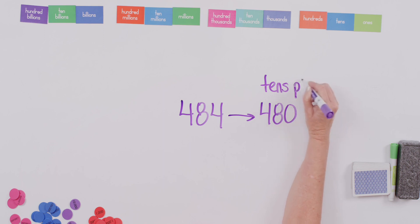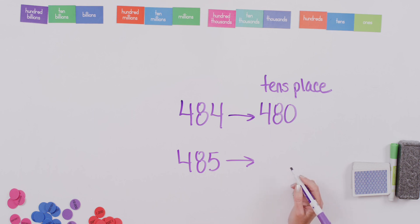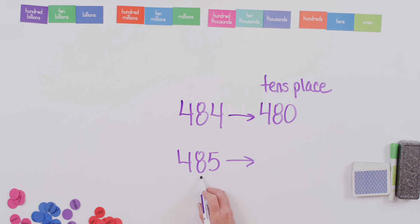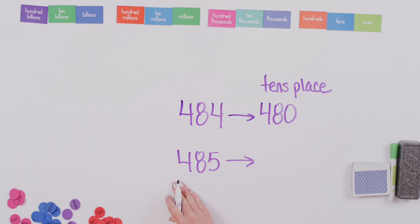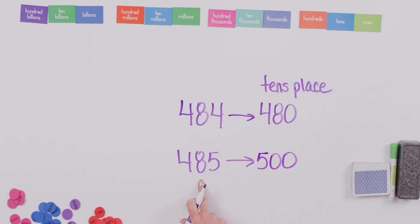So this is rounded to the tens place. Another way we can round it — if you want to round to the hundreds place, you'd look next door, and this number right here is five or more. So what do you think we'd do? We would round up. What's one greater than four? Five hundred. So when we round, we always look to the place value to the right. Remember: if it's five or more, we round up; if it's less than five, we keep it the same. All right, let's practice with some bigger numbers now.